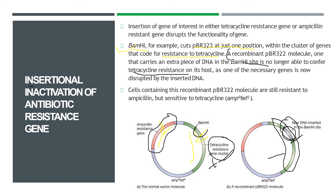This is called insertional inactivation — the activity of the tetracycline region is inactivated completely. However, cells containing this recombinant pBR322 molecule are still resistant to ampicillin, as the ampicillin resistance region is still active and not inactivated. I'll be explaining more plasmids and recombinant patterns in coming videos. Thank you for watching — stay tuned for more.